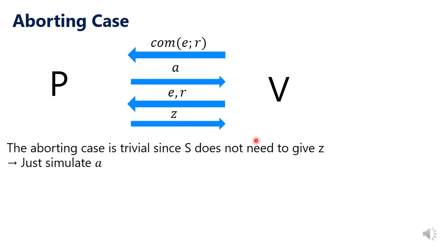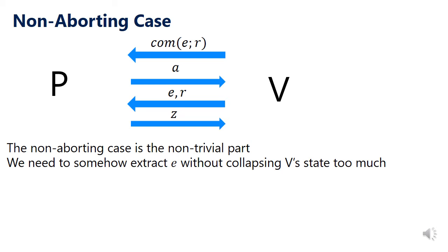Our task reduces to constructing two simulators for the aborting and non-aborting cases separately. In the aborting case, simulation is easy: when the verifier aborts, the prover doesn't need to send the final message Z, so the simulator only needs to simulate A, the first message of the sigma protocol, which can be done without the witness. The non-trivial case is the non-aborting case: the verifier doesn't abort, so the prover must send Z, meaning the simulator must also simulate Z. For simulating Z, the simulator must somehow extract E without collapsing the verifier's state too much.